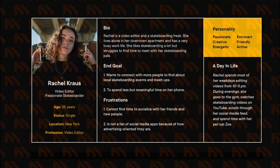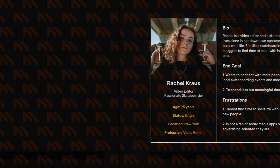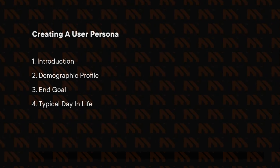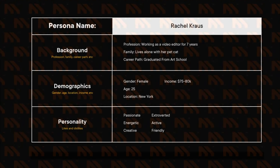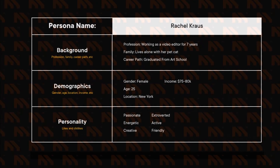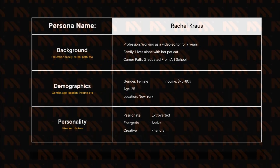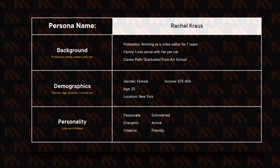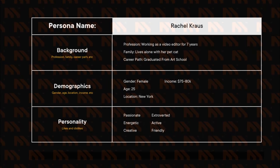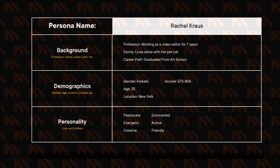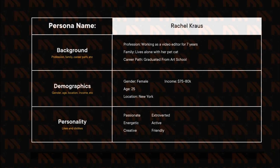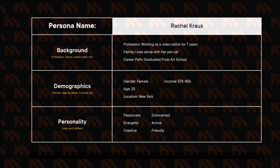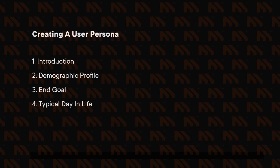To create a user persona by yourself, you should add the following key information. First, the Introduction — also called the header. This section should contain the name, image, and a short summary of the individual. Second, the Demographic Profile, where you add the personal and professional background along with the environment — things like age, gender, ethnicity, education, job, occupation, devices they use, and their interests.